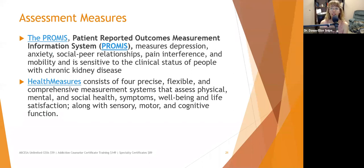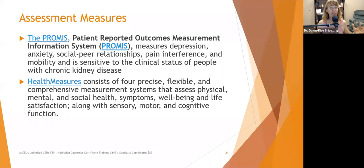The PROMIS — Patient-Reported Outcome Measurement Information System — measures depression, anxiety, social peer relationships, pain interference, and mobility, and is sensitive to the clinical status of people with chronic kidney disease. It's available through Health Measures, a website offering four comprehensive measurement systems assessing physical, mental, and social health symptoms, well-being, lifestyle satisfaction, and cognitive functioning. Many instruments are available for free, sponsored by the National Institutes of Health — a valuable resource for private practices or small clinics that can't afford expensive assessment tools.